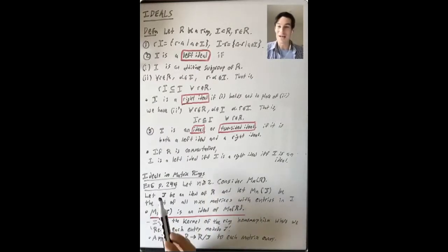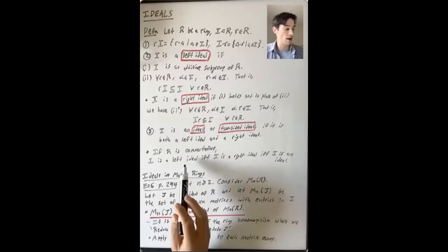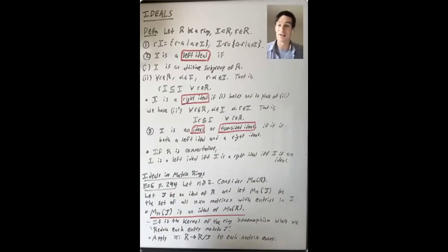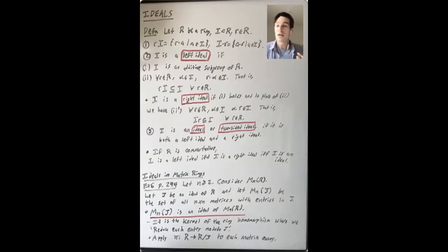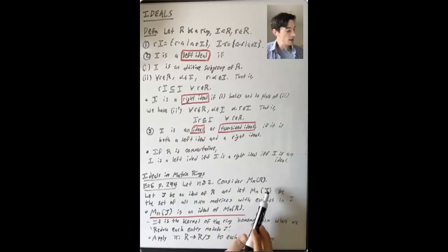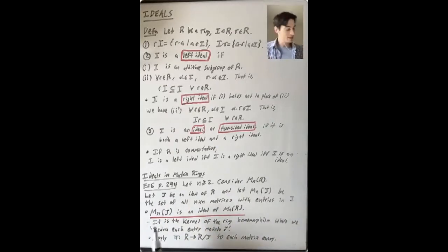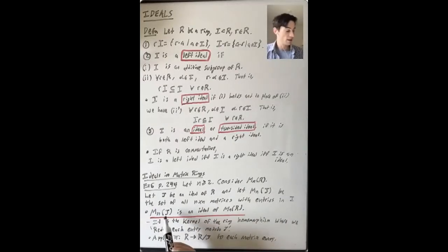I want to go back and discuss some examples from section 7.3 involving ideals in matrix rings. First I'll do one example, and the next example will be a situation where you have a left ideal that is genuinely not a right ideal, to emphasize how things work harder when R is not commutative. Example 6 on page 244: take n at least 2, consider the ring of n-by-n matrices with entries in R. Let J be an ideal of R, and let MnJ be the subset of MnR consisting of all n-by-n matrices with entries in J. The claim is that MnJ is an ideal of MnR.